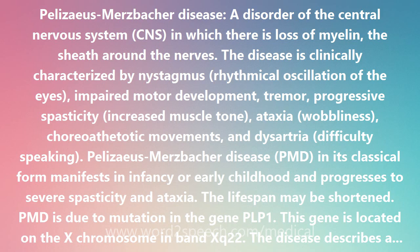Among the mutations in the PLP1 gene locus that can cause PMD is a duplication of PLP1, in which the duplicated region may be far away from the original PLP1 locus at chromosome region Xq22. The PLP1 duplication is almost always present in the mothers of affected boys and usually can be traced to the maternal grandfather.